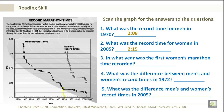2005 would be roughly in between 2000 and 2010, and if we take that to the women's line, that would bring us to 2 minutes and 15 seconds. In what year was the first women's marathon time recorded? That would be 1972, right here. What was the difference between men's and women's record times in 1972? 36 seconds. What was the difference in 2005? That would be only 10 seconds.